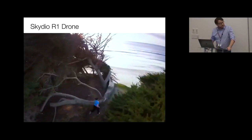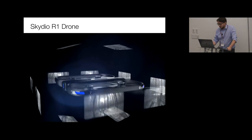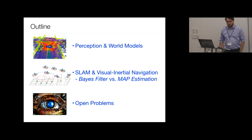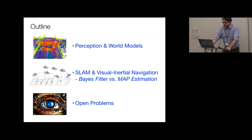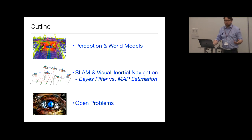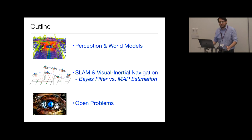The plan for today is to cover spatial perception, focusing on simultaneous localization and mapping and visual-inertial navigation. My goals are threefold: first, a broad overview for those not working in this area; second, pointers to open source implementations for those wanting to use these technologies without worrying too much about algorithms; and finally, for those doing active research on SLAM, I'll conclude with a short list of open problems and the future of spatial perception.